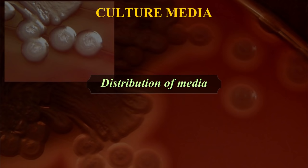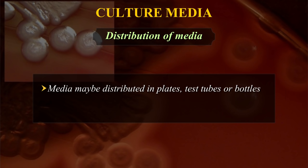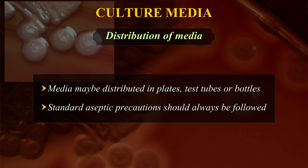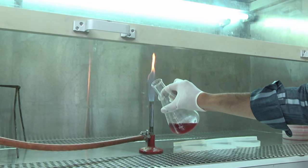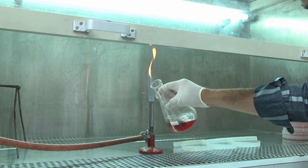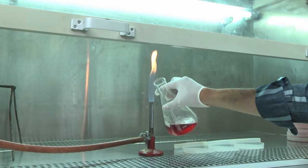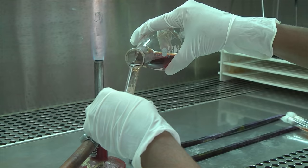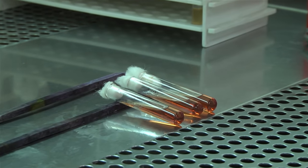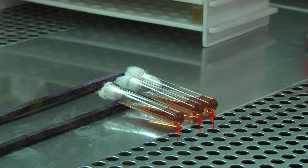Distribution of media. Media may be distributed in plates, test tubes, or bottles. Standard aseptic precautions should always be followed. It is preferred to work within an inoculation hood or cabinet filled with a filtered air supply. Always heat the mouth of the container from which the medium is being poured in a flame. For making a slant or slope, the tubes have to be laid at an angle which allows the slant to be formed. The medium is poured such that there is a thick butt at the bottom, providing a large surface area for inoculation.